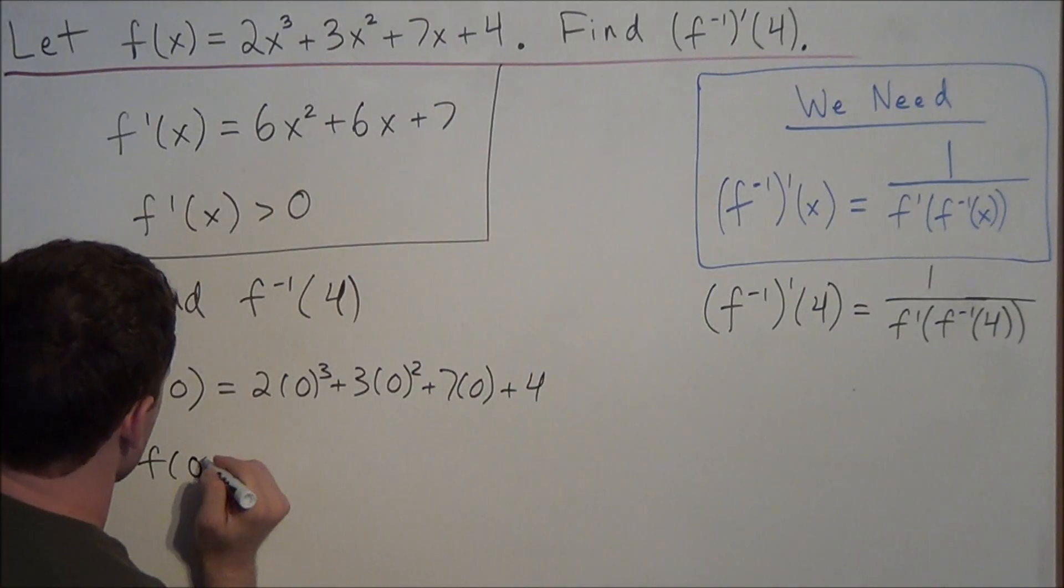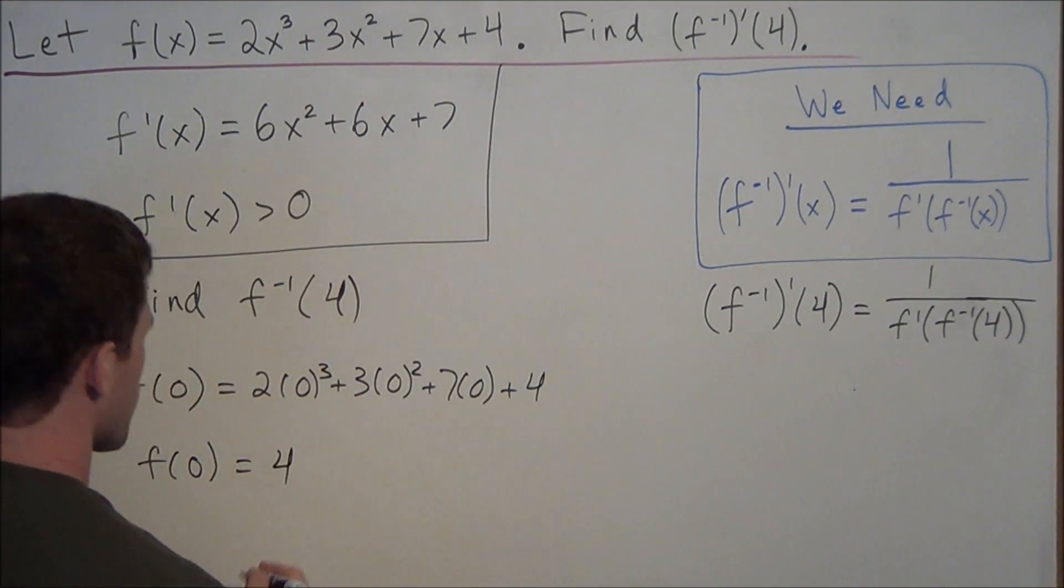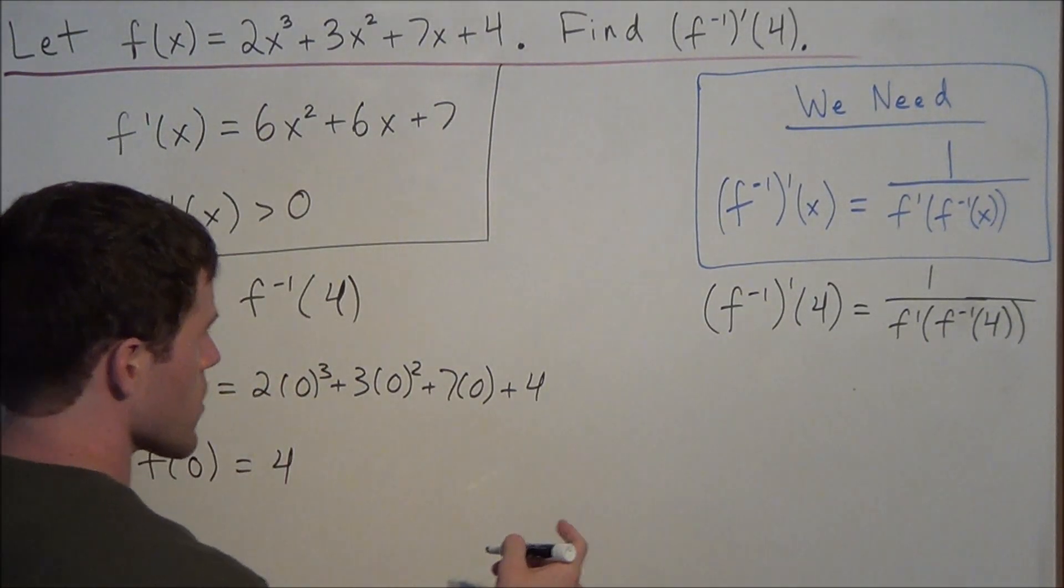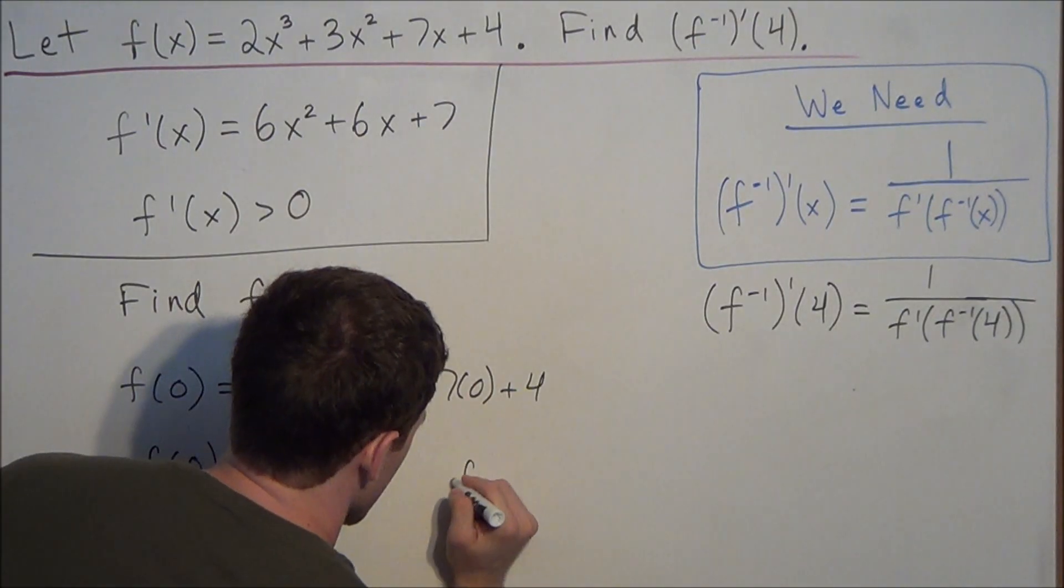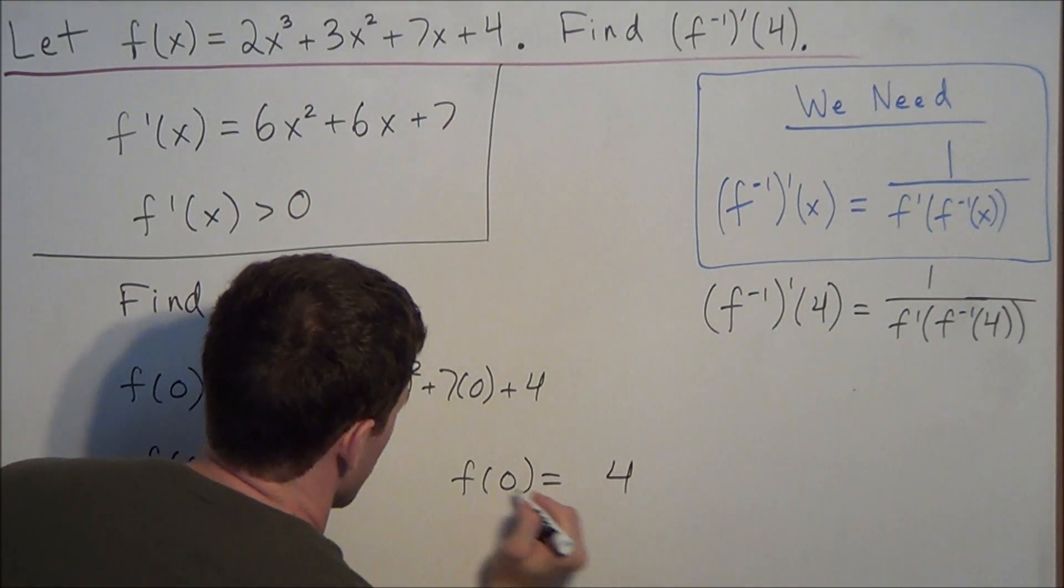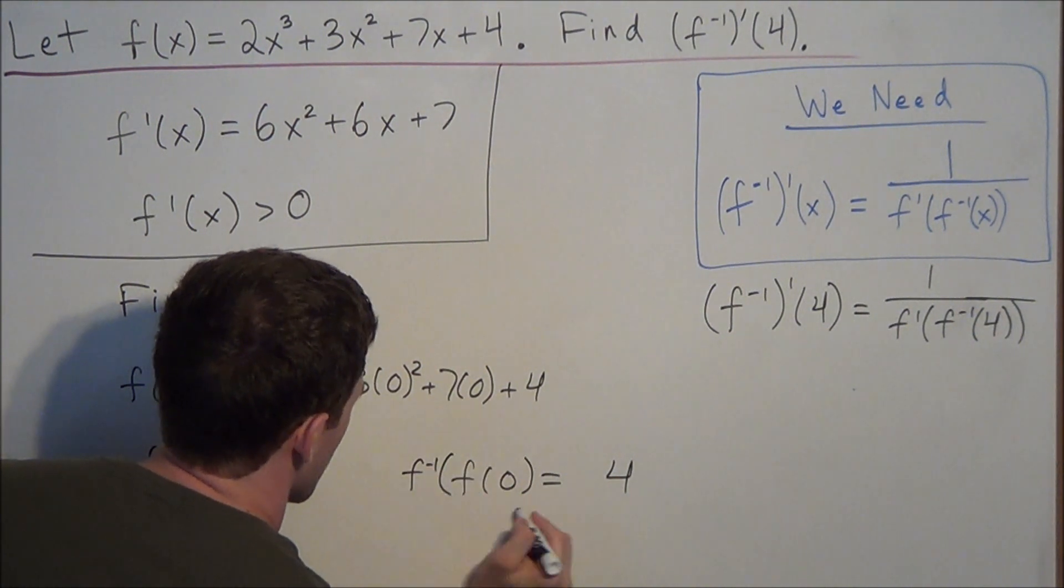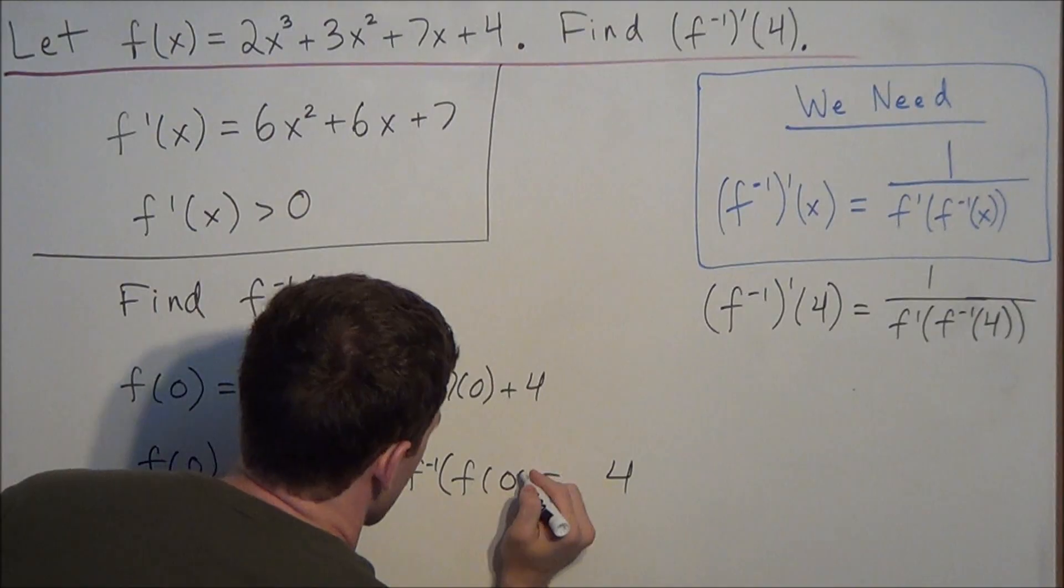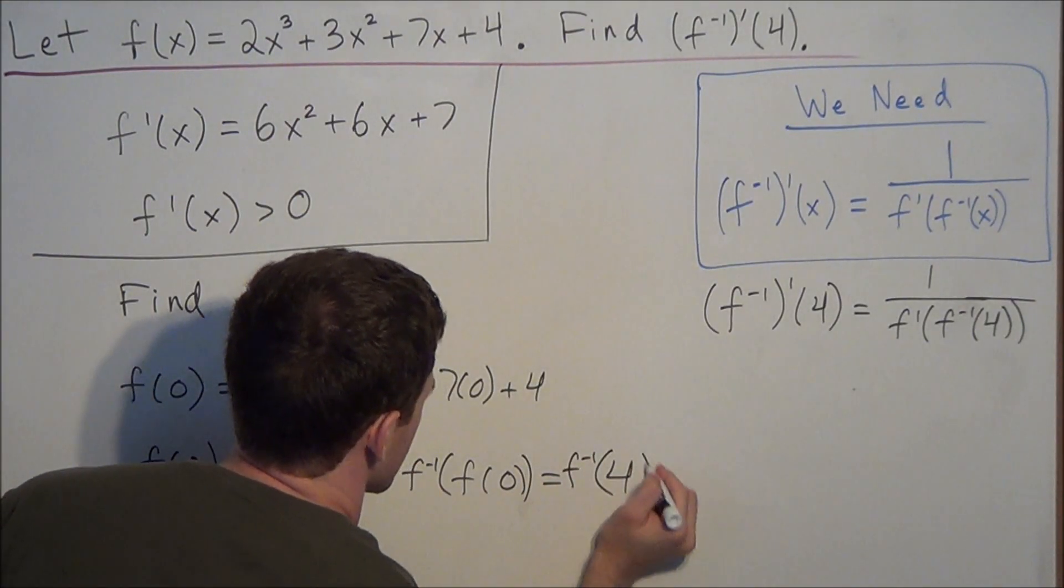But now we need to understand the concept of an inverse function. If f of 0 is equal to 4, I'll write this over here, f of 0 equals 4, then if we take f inverse of both sides, so we're taking f inverse of both sides...